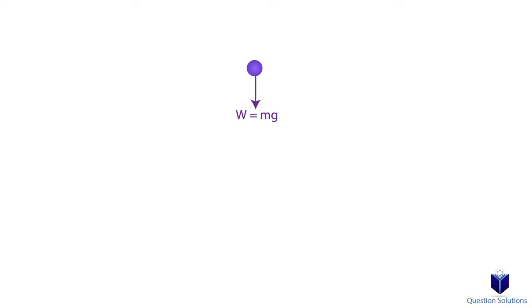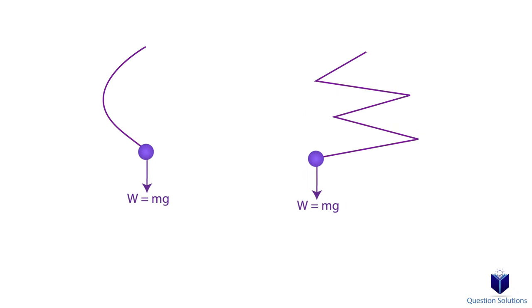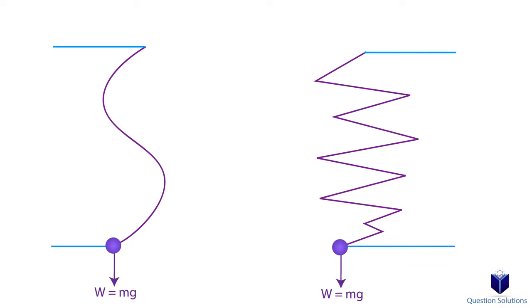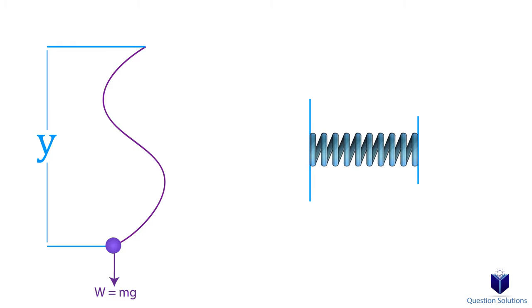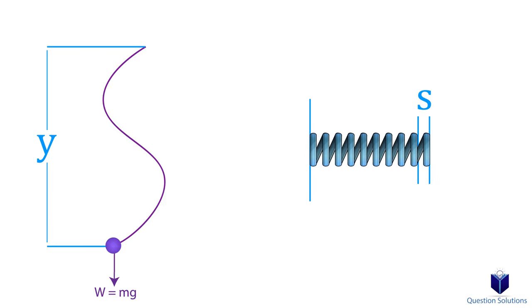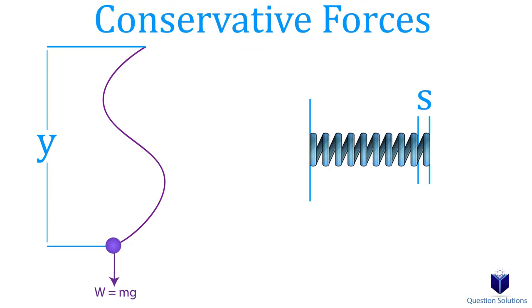Now let's say we have a particle. There is a weight to this particle which is mass times the acceleration due to gravity. Regardless of the path this particle takes to go from the top to the bottom, the work done by weight is only dependent on the initial position and the final position of the particle. Another conservative force is the work done by a spring — the work done by the spring force is only dependent on the elongation or compression of the spring. Those are conservative forces.